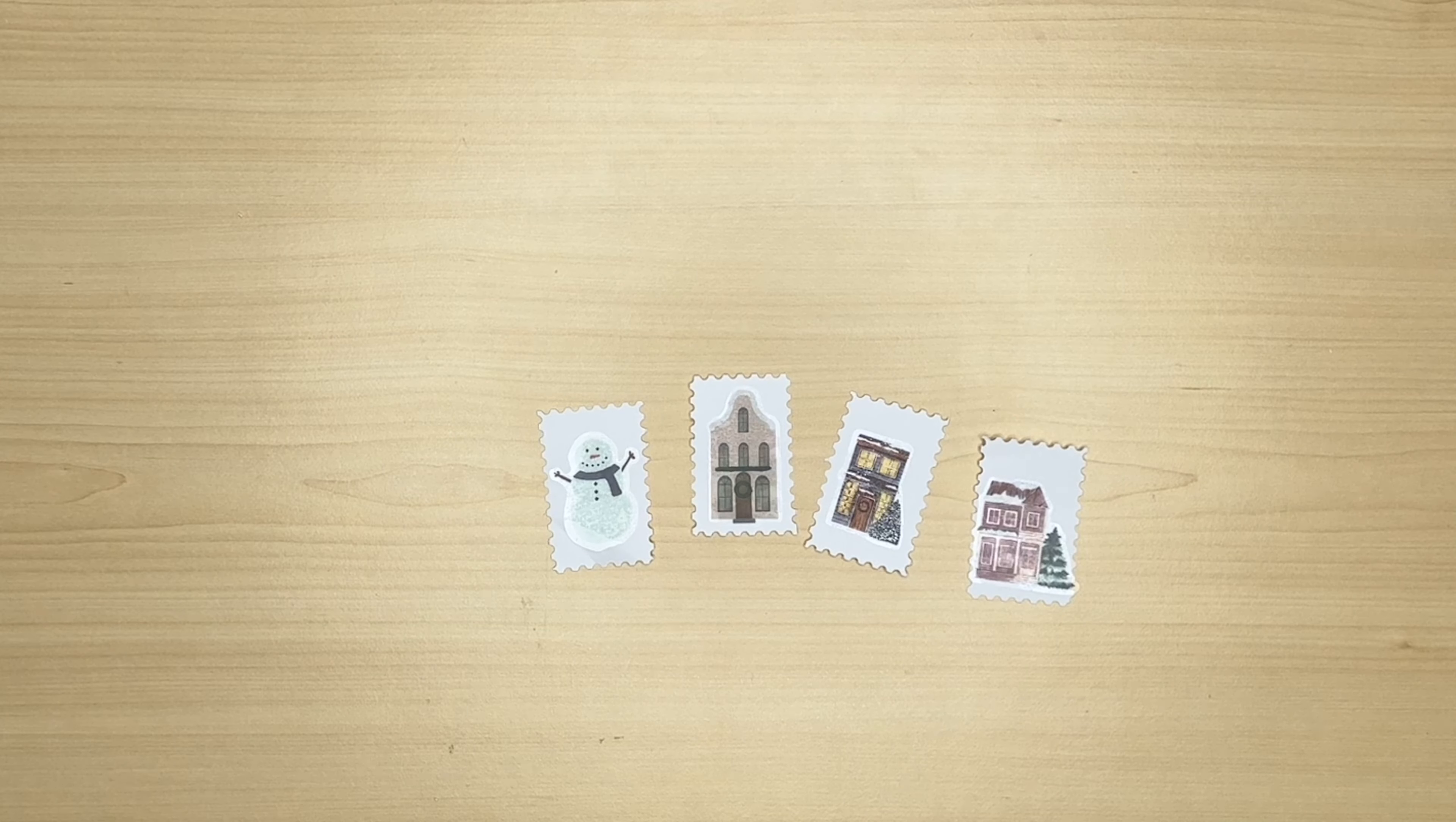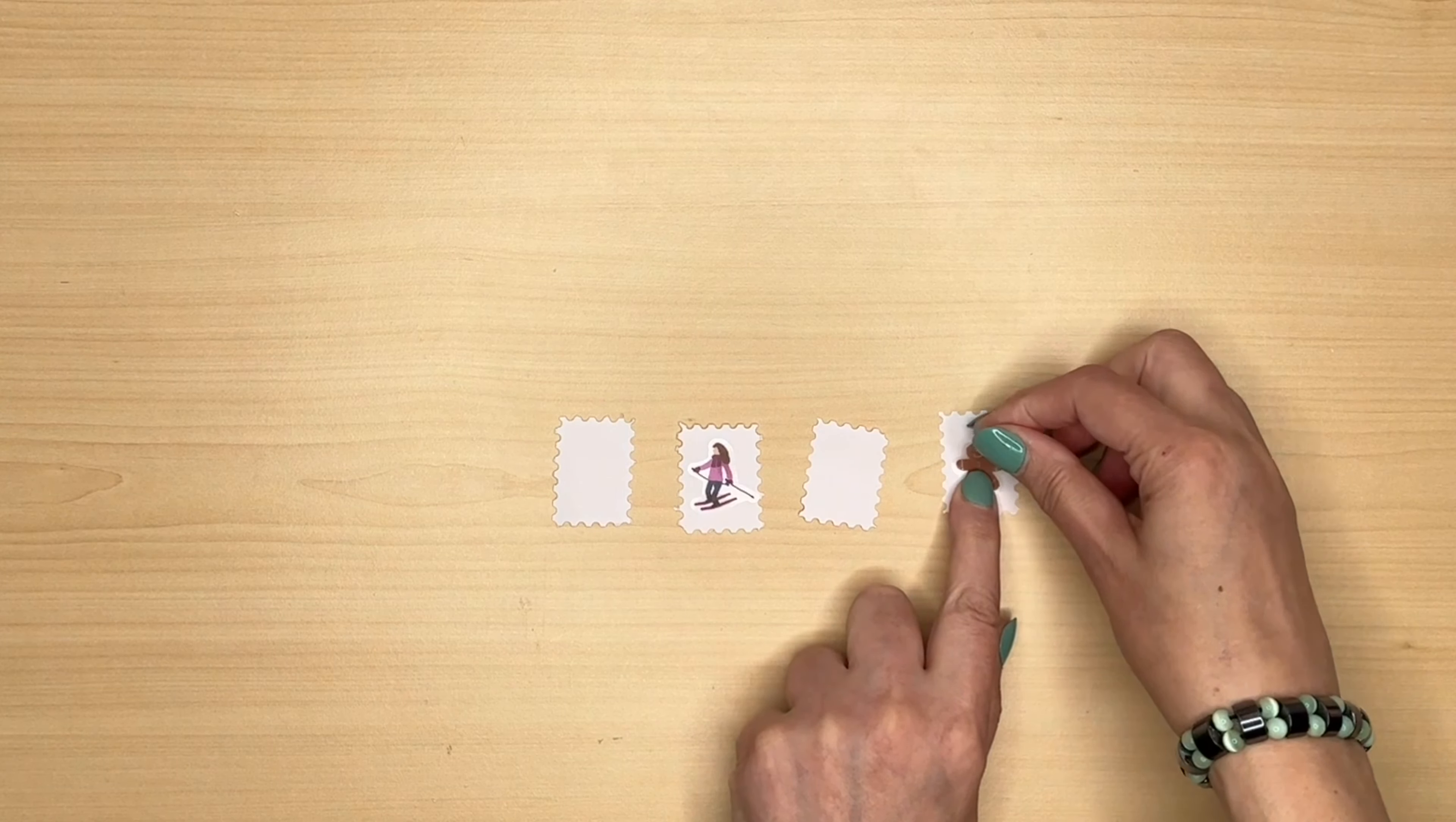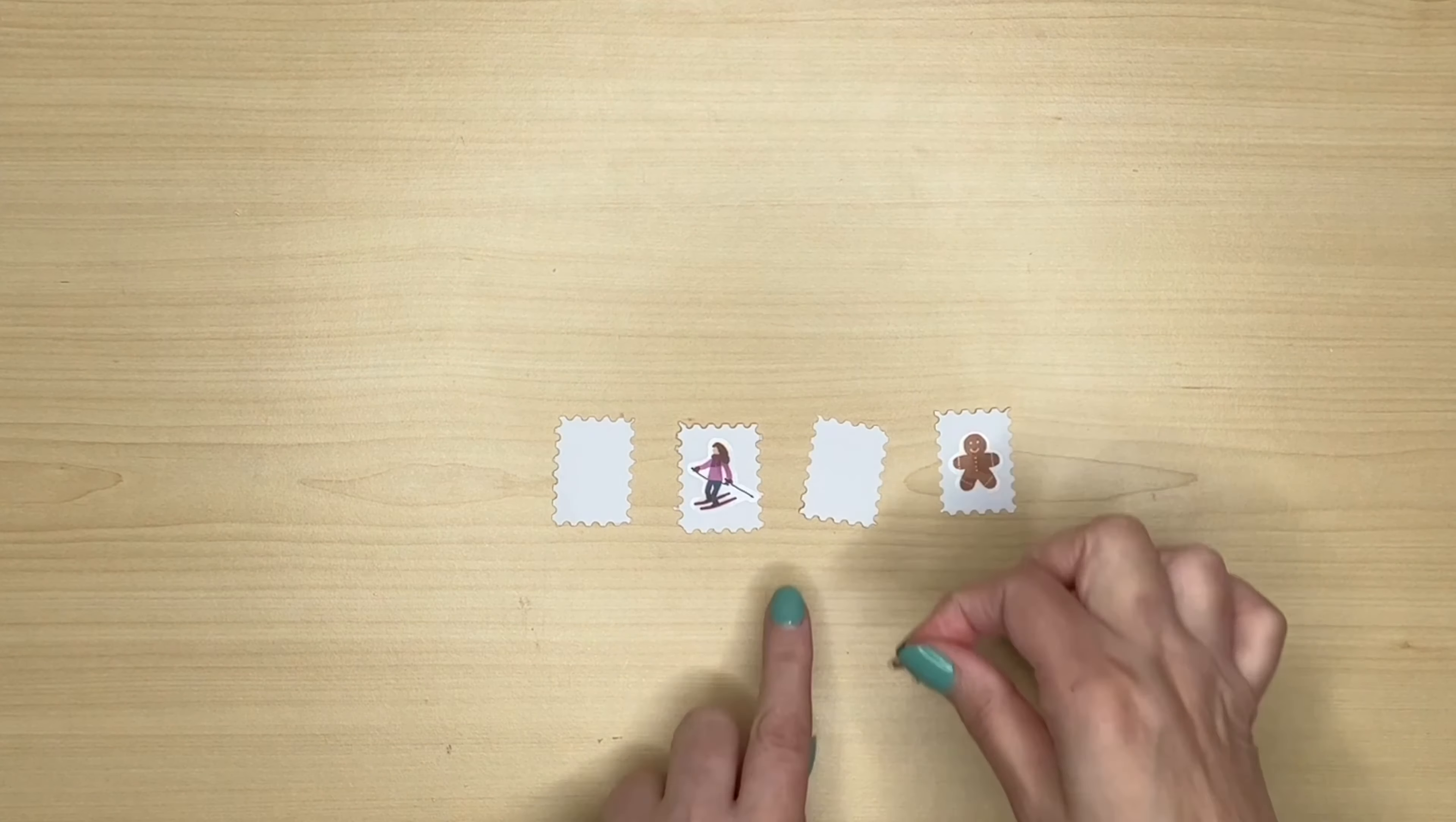I thought I would use Planything's Seasonal Vibes for the smaller stamps because they have lots of very tiny icons in them.